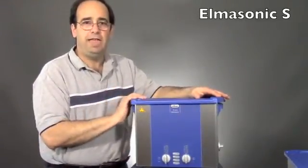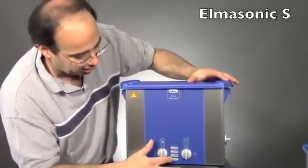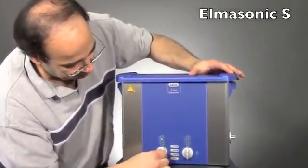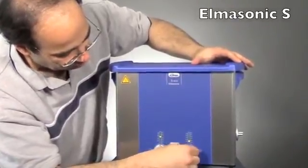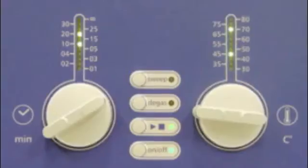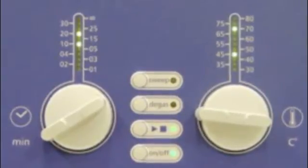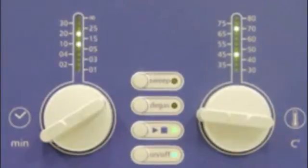The other thing about the S line is that it's got these nice LEDs. All you have to do is turn it on, set the minutes here, set the temperature on this one, and this will show you the set time and the actual time, and the set temp and the actual temp. That way you'll be able to constantly monitor your process.